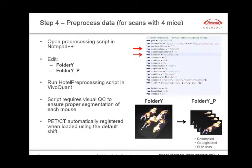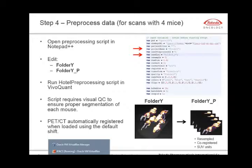Once done with the study, we preprocess our data — especially relevant when we scan four mice at a time, which is most of the time. For that, we worked with Bill and TJ to create a hotel preprocessing script. All we have to do is open the script in Notepad++ and edit the location of folder X, the location of folder Y on IPACS, and folder Y underscore P. We ensure the voxel size is approximately 0.4 millimeters on each side. Once we run the script from VivoQuant, it segments each mouse, co-registers them, crops the images, and generates four individual files into the underscore P folder on IPACS.